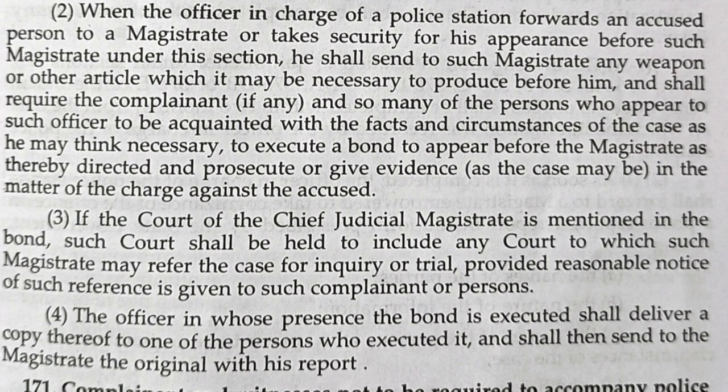Sub-clause 3: If the court of the Chief Judicial Magistrate (CJM) is mentioned in the bond, such court shall be held to include any court to which the CJM may refer the case for inquiry or trial, provided reasonable notice of such reference is given to the complainant or person. The CJM may not deal with the case personally — he may assign it to another magistrate for cognizance. Every district has one CJM who oversees many magistrates under him.